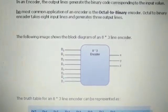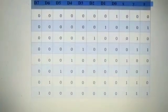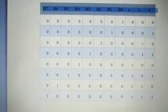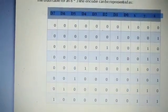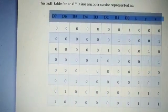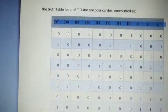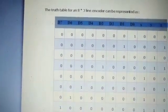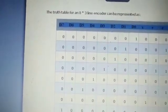An octal to binary encoder accepts an 8-bit input code and activates one of 8 output lines corresponding to that code. An octal to binary encoder performs the opposite function. It accepts 8 inputs and produces a 3-bit output code corresponding to the activated input.